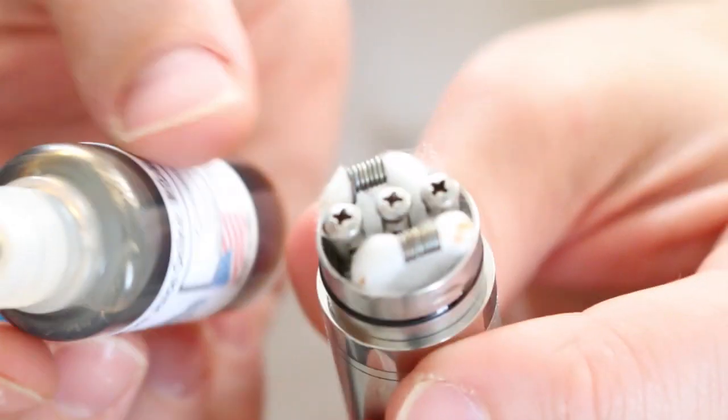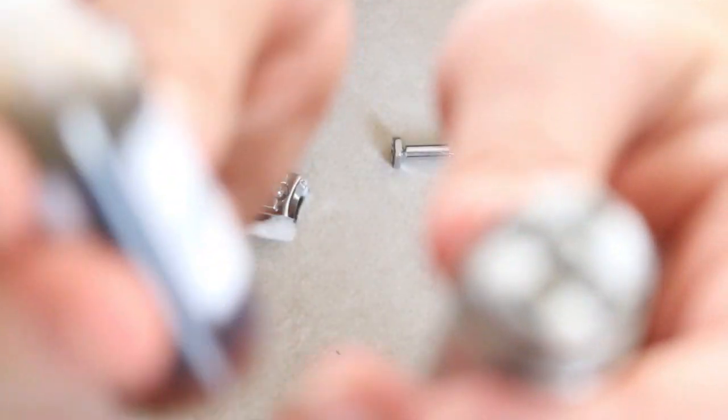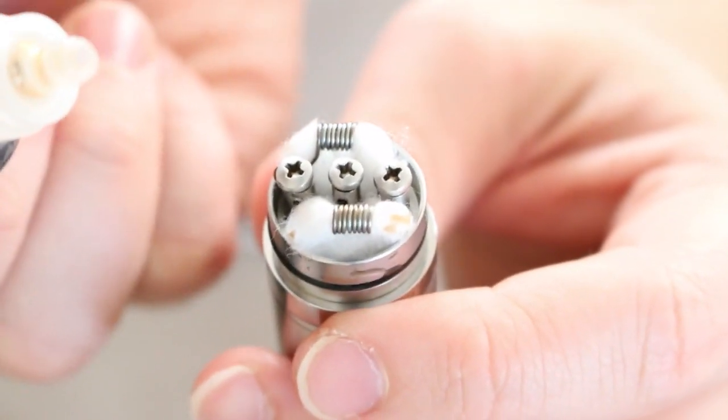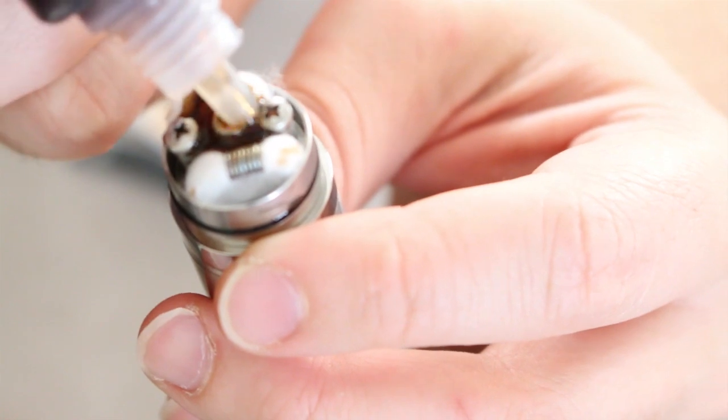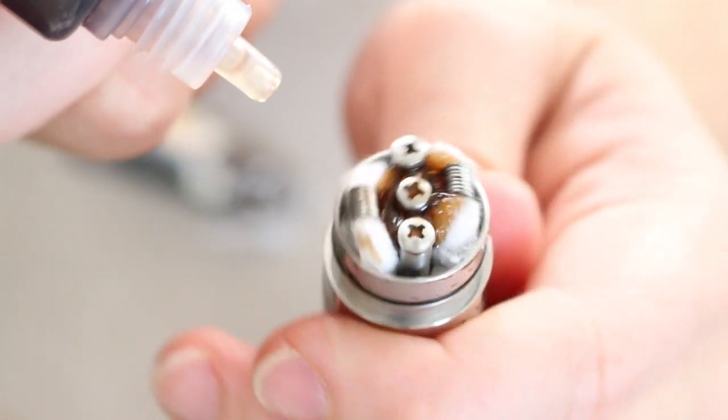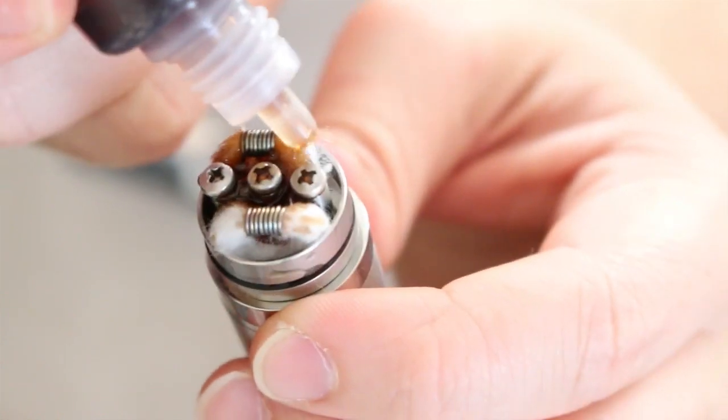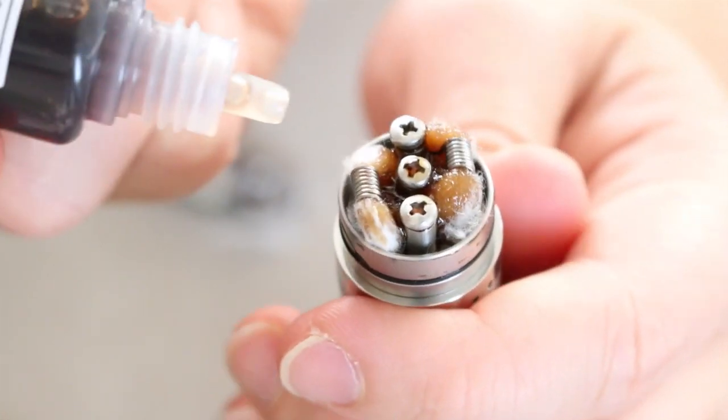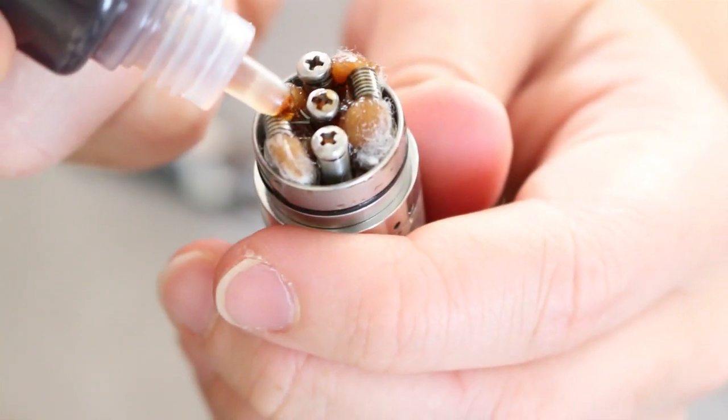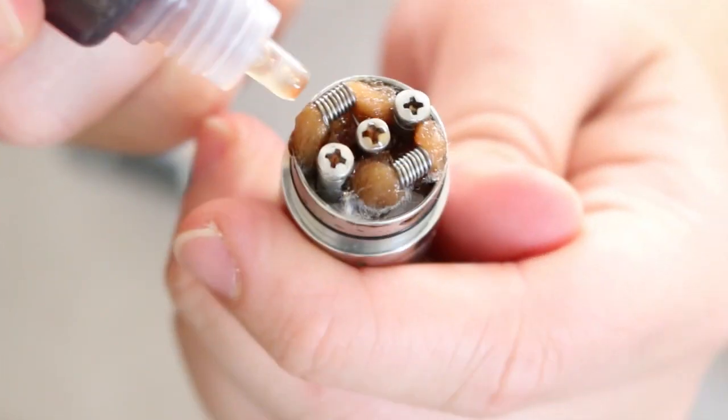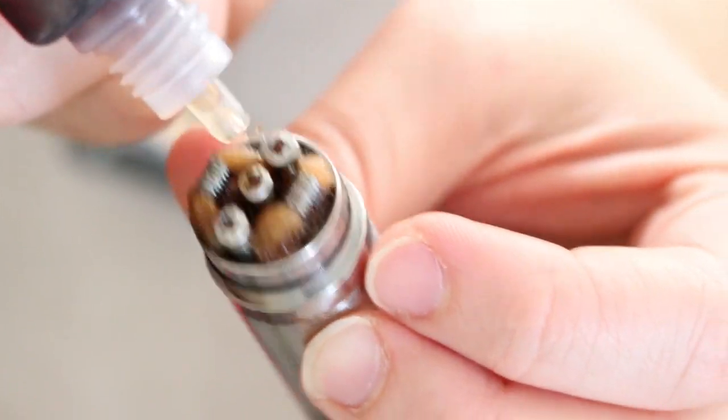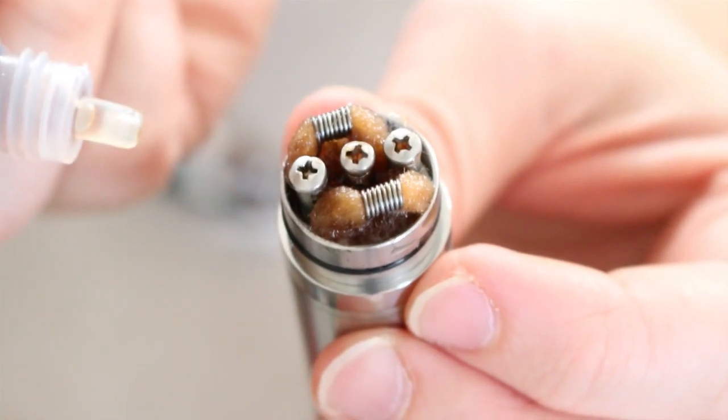Next all you've got to do is saturate the cotton. So I'm using Cookies and Cream by Mt. Baker. This is a MaxVG. What I like to do is right on the inside of this positive post, I'll just juice it up right there, and then I'll saturate all the wicks around it. And just for the sake of saturating all of it, you can just put one drop on top of each coil, just so it saturates inside of the cotton that's inside of the coil. And just dab around the juice. Once you get the cotton nice and saturated, you can go ahead and fire it up and see how it fires up.